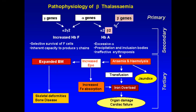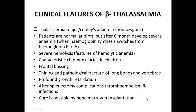This is briefly the pathophysiology of beta thalassemia. Primary defects in the genes cause excessive accumulation of alpha chains causing membrane damage, ineffective hematopoiesis, hemolysis causing jaundice, and anemia requiring blood transfusion. Repeated transfusion causes iron overload leading to organ damage — hemosiderosis. Increased erythropoietin causes extramedullary hematopoiesis leading to skeletal deformity and bone disease, and also causes increased iron absorption from the gut worsening hemochromatosis.